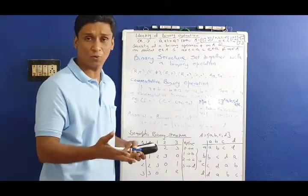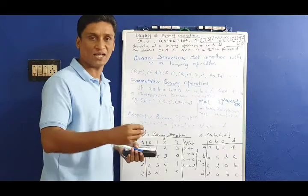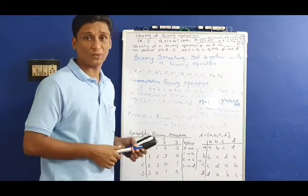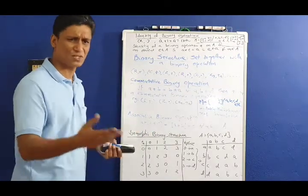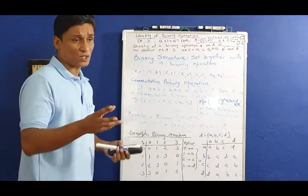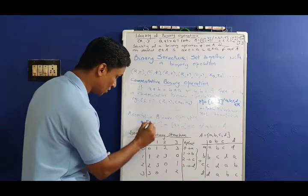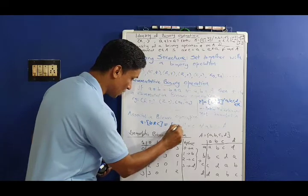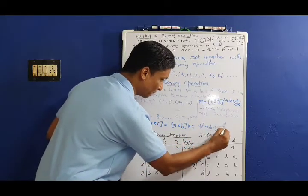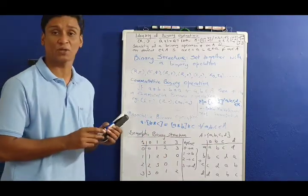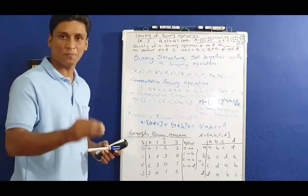You have to understand this difference. For R under addition and Z under multiplication, these are commutative binary operations. But for 2 by 2 matrices under matrix multiplication, it is not commutative. Now the next definition is associative binary operation: for all A, B, C in A, (A star B) star C equals A star (B star C). Addition and multiplication are associative binary operations.